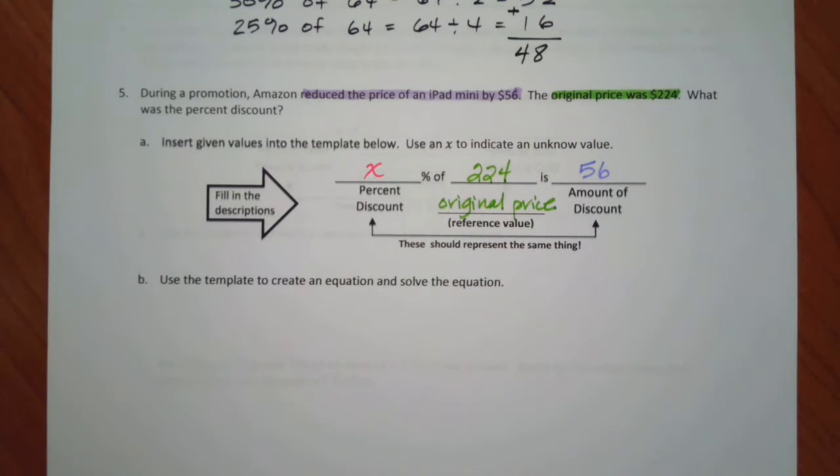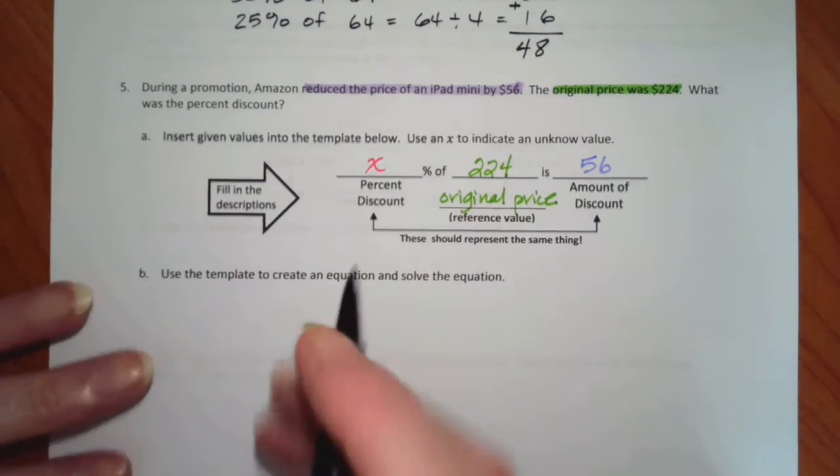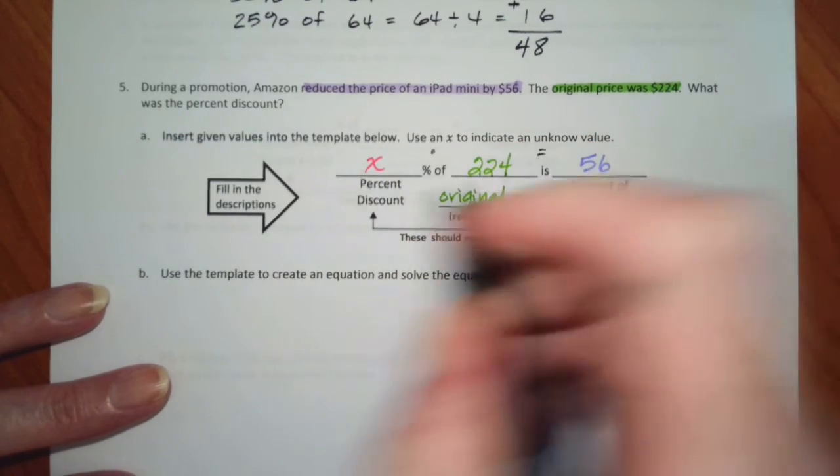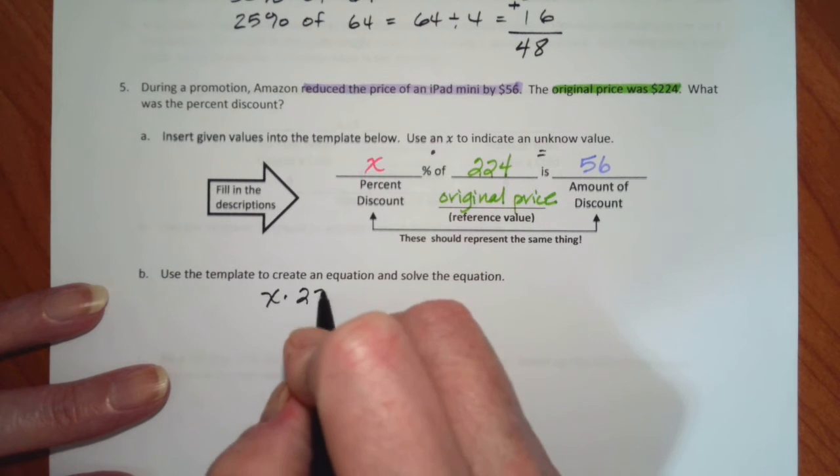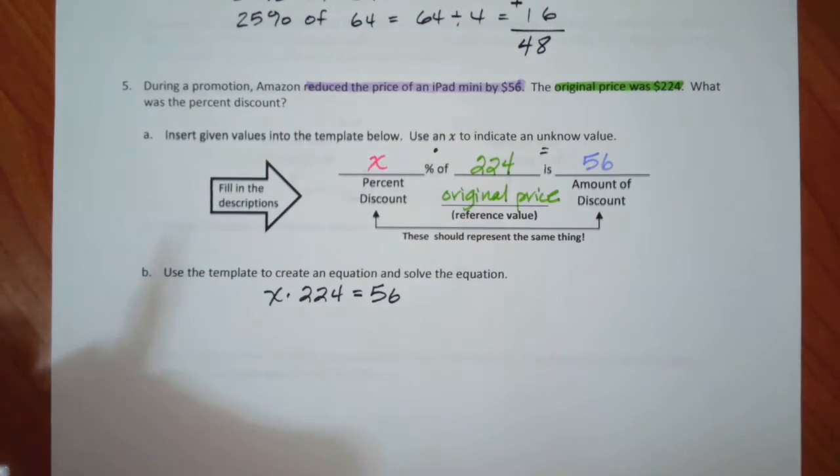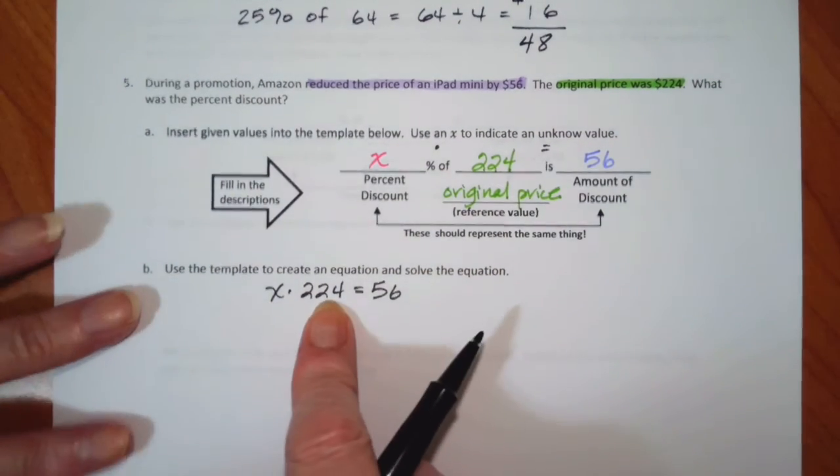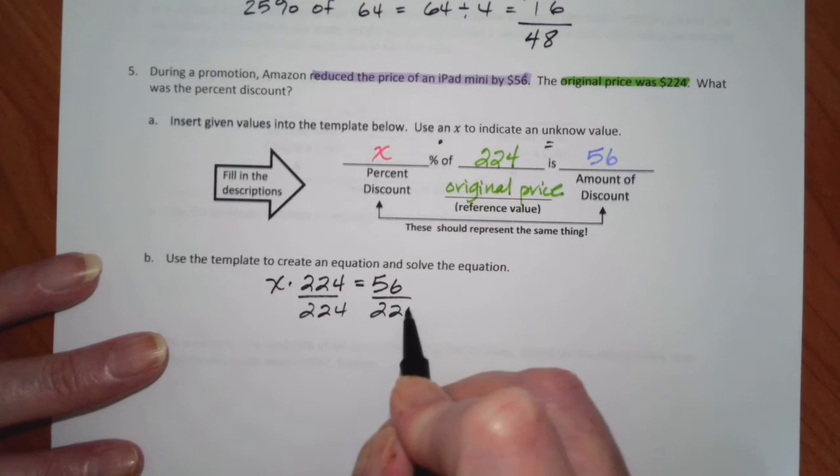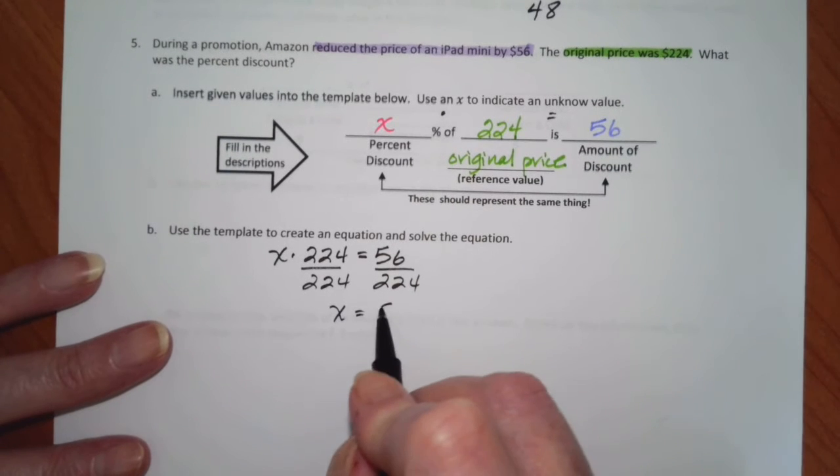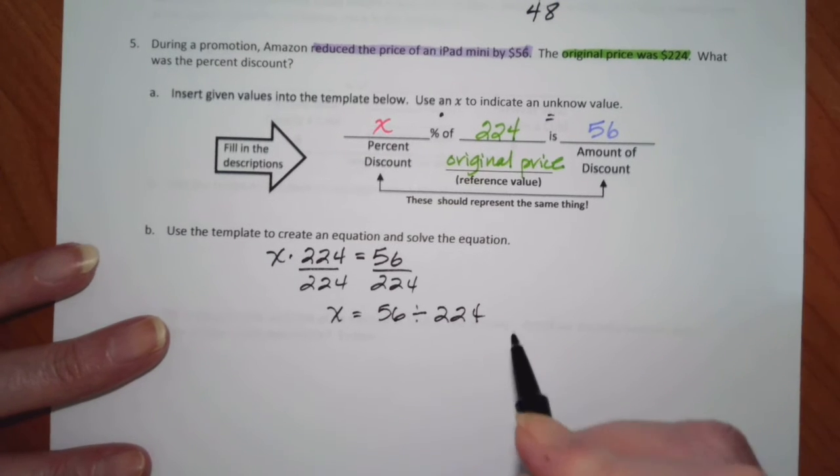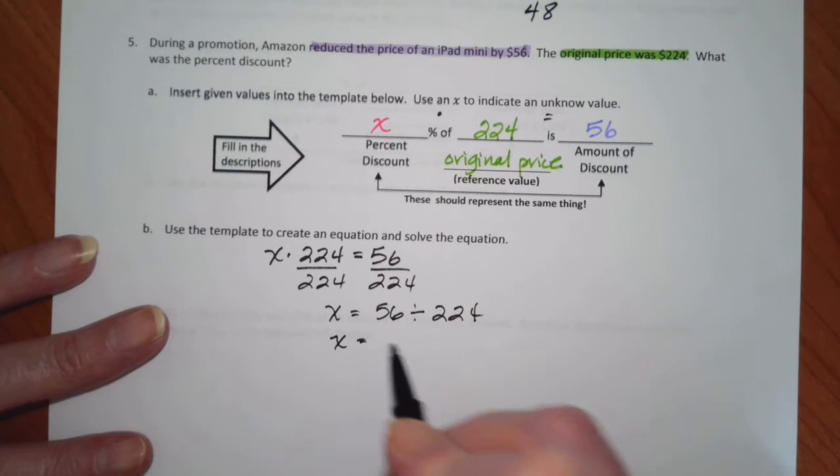Here's what I've got going on here: I know that this times this is that. So x times 224 equals 56. To get the x by itself, to undo multiplication, I divide. So x is equal to 56 divided by 224, which tells me that x is 0.25.